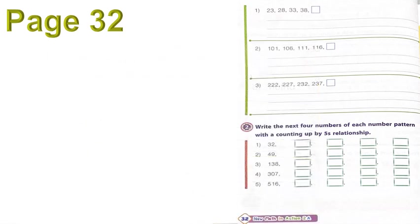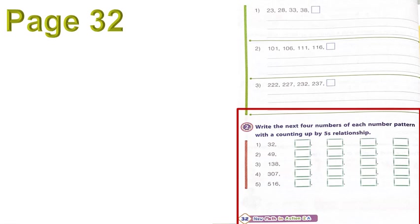Number two: write the next four numbers of each number pattern with a counting up by fives relationship. For example, number one: 32 plus 5 is — and so on and so forth.